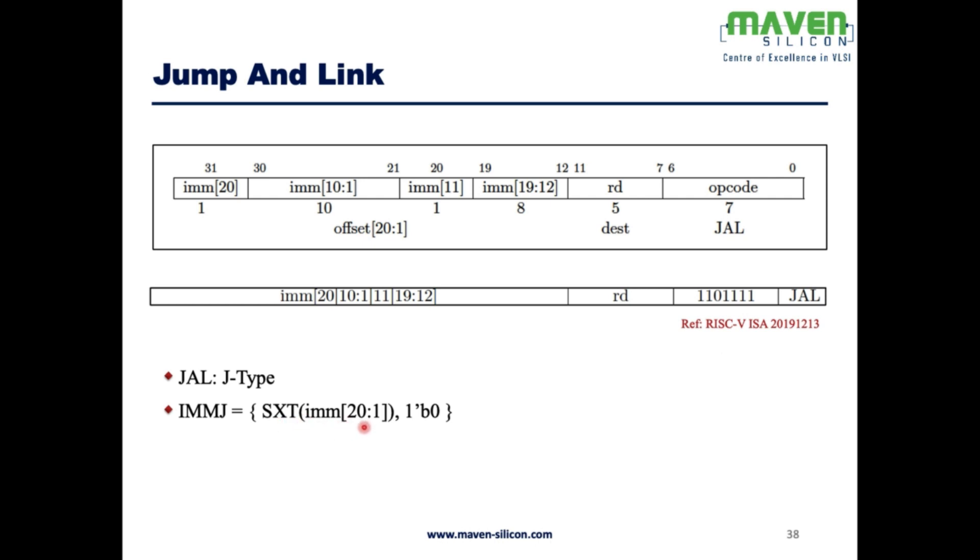We are going to append 0 at LSB. So what happens? PC is going to be PC plus this offset, so it's going to jump to this particular location. This offset is defined by this immediate value IMMJ. PC is PC plus IMMJ, and at the same time the Rd will have PC plus 4.